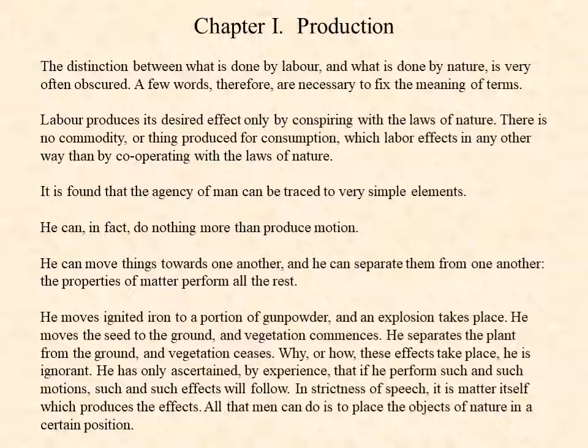It is found that the agency of man can be traced to very simple elements. He can in fact do nothing more than produce motion — he can move things towards one another and he can separate them from one another. The properties of matter perform all the rest. He moves ignited iron to a portion of gunpowder and an explosion takes place. He moves the seed to the ground and vegetation commences. He separates the plant from the ground and vegetation ceases.